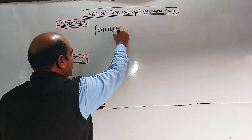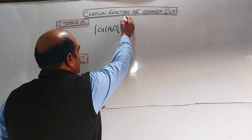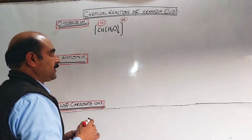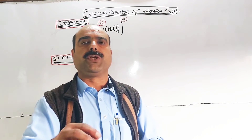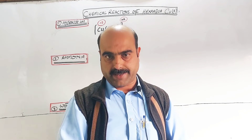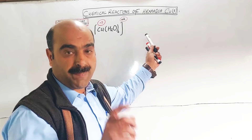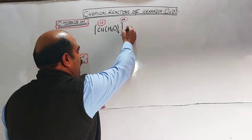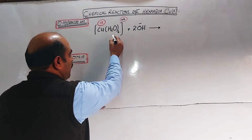The complex is Cu(H₂O)₆ with a plus two charge. Water is a neutral ligand, so the plus two directly represents the copper oxidation state. The reaction is with hydroxide ions. Hydroxide ions can be obtained from sodium hydroxide solution. When we add water and hydroxide ions to the reaction, if the solution is basic, two moles of hydroxide ions are needed to balance.